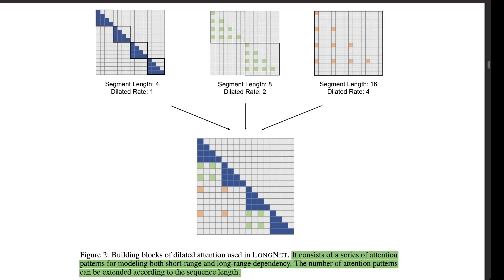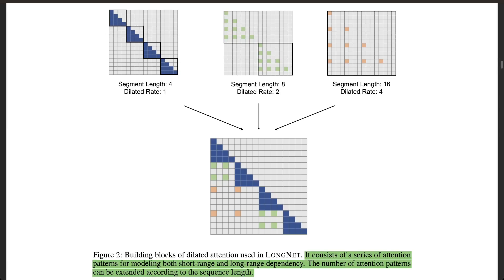Let's quickly look at how the dilated attention mechanism works. In a standard attention mechanism, the attention weights are computed over a fixed-size window of tokens, meaning the model can only attend to a limited number of tokens at a time — that's why different LLMs have different context window lengths. Dilated attention solves this problem by using a sliding window that has gaps between the tokens.